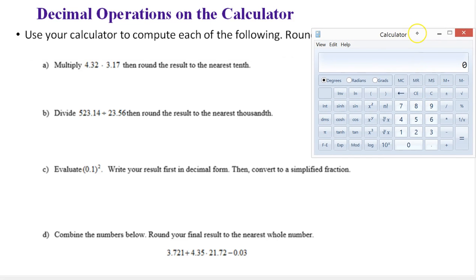But in general, most of the steps are somewhat similar. They're just easier on your handheld calculator. So here we want to multiply 4.32 times 3.17 and round our results to the nearest tenth.